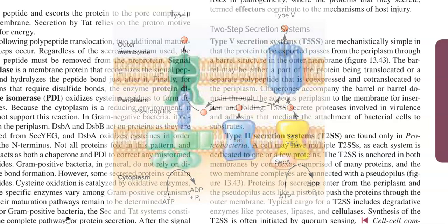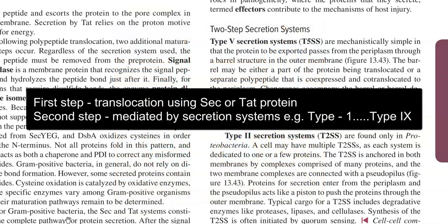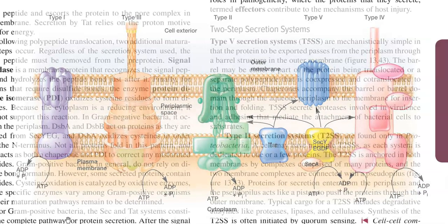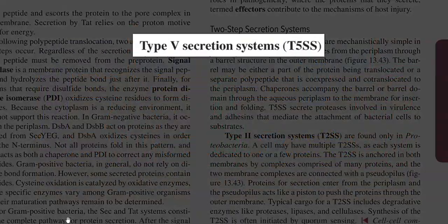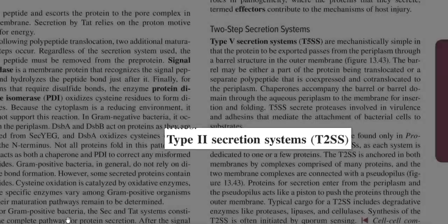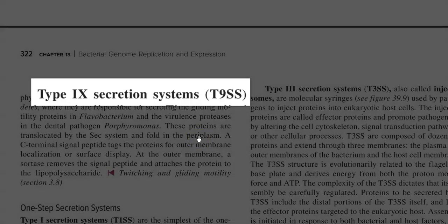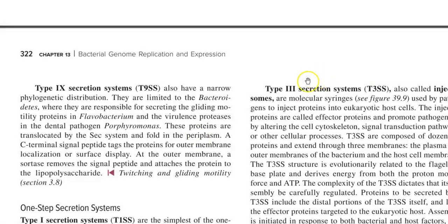The first step is related to translocation aided with the help of Sec protein or Tat protein, followed by the next secretory system. Under this category, Type 5 secretion system, Type 2 secretion system, and Type 9 secretion systems were existing.